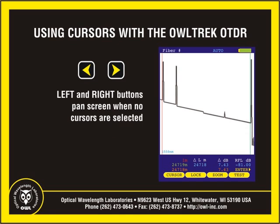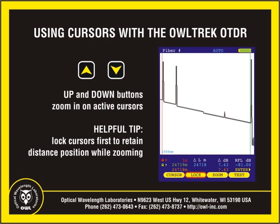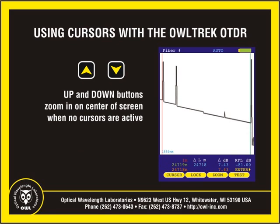When no cursors are selected, the left and right arrow buttons pan the screen left or right. When one or more active cursors are selected, the up and down buttons zoom in or out on the active cursors. It is highly recommended to lock the cursors so they do not lose their distance position. When no cursors are selected, the up and down arrow buttons zoom in or out on the center of the screen.